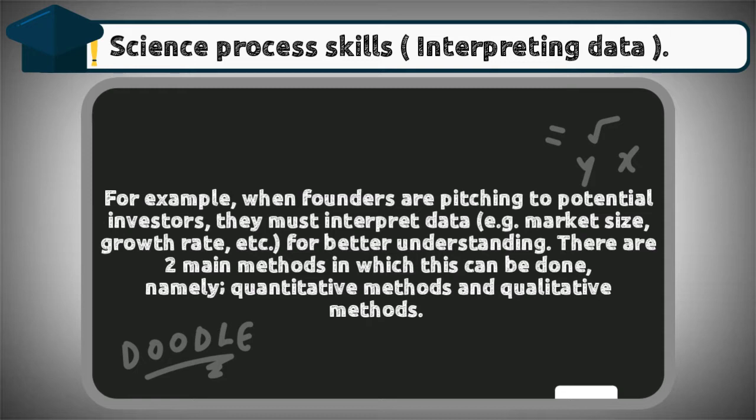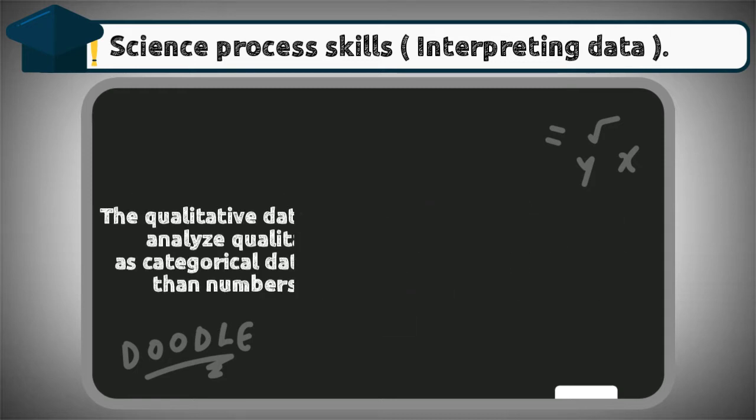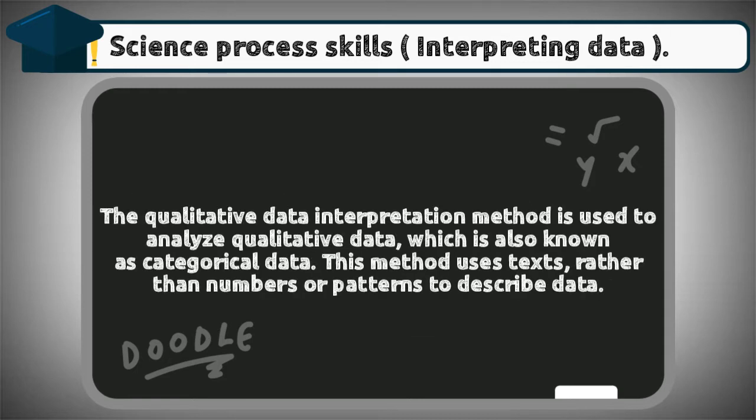The qualitative data interpretation method is used to analyze qualitative data, which is also known as categorical data. This method uses texts rather than numbers or patterns to describe data.